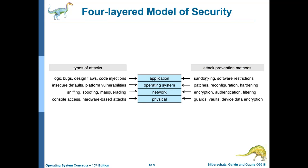Attack prevention methods in networks include encryption, authentication, and filtering. For physical security, attack types include console access and hardware-based attacks such as physically stealing a server. Attack prevention methods include guards, bolts, and device data encryption.